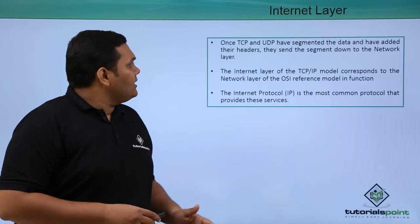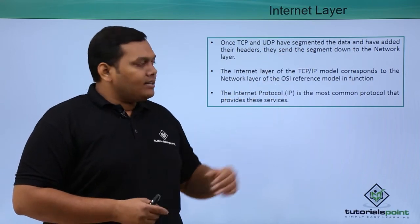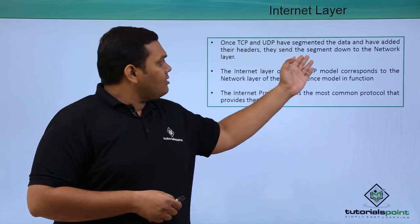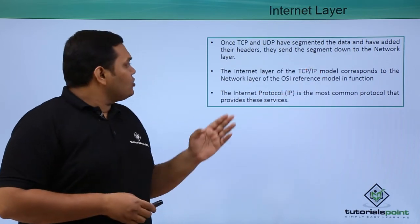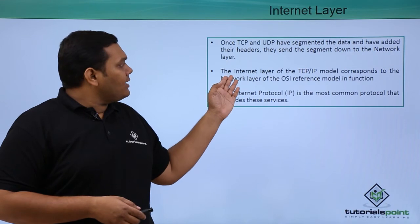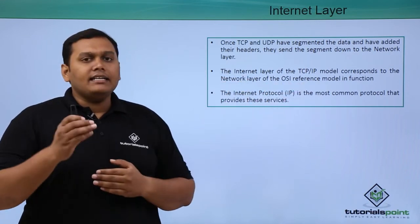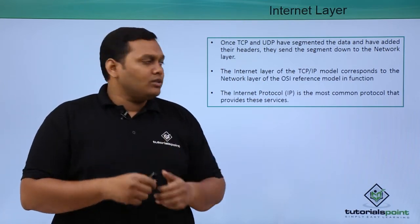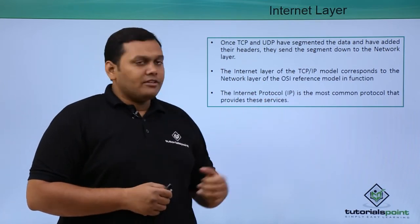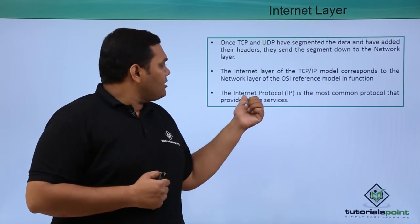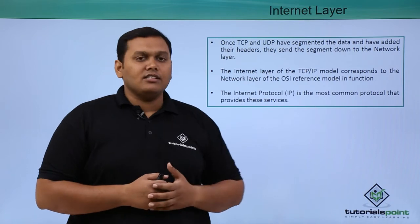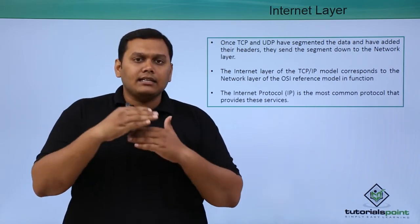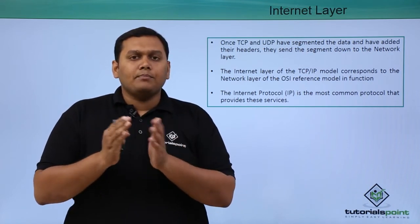TCP and UDP have segmented the data and added headers and footers, then send the segment down to the network access layer. The network layer in the OSI reference model corresponds exactly to the internet layer in the TCP/IP model in functioning. The internet protocol is the most common protocol providing these services, along with routing protocols and ICMP.